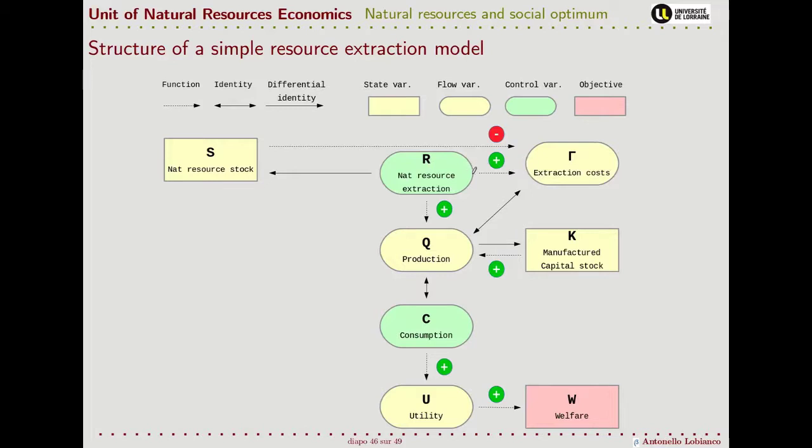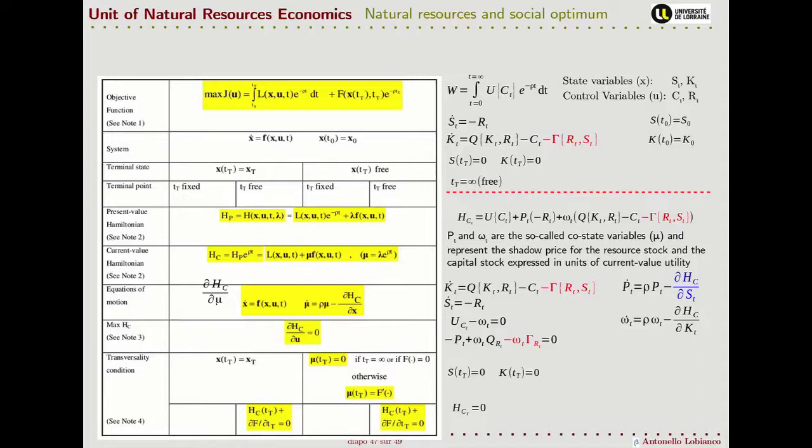Extraction cost depends in a positive way from the level of extraction and in a negative way from the resource stock. Considering extraction costs, the big difference is that now inside the Hamiltonian also the stock of natural resources will enter through this term.